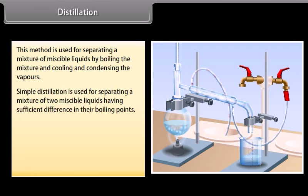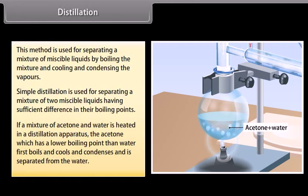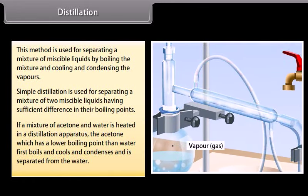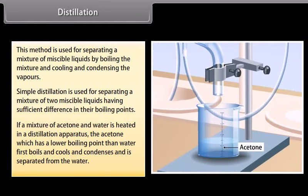Simple distillation is used for separating a mixture of two miscible liquids having sufficient difference in their boiling points. If a mixture of acetone and water is heated in a distillation apparatus, the acetone, which has a lower boiling point than water, first boils and cools and condenses and is separated from the water.